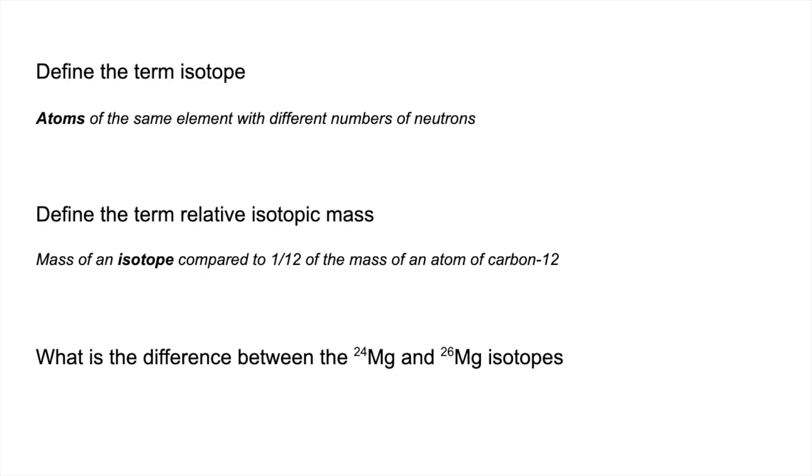And then finally, what's the difference between the Mg-24 and Mg-26 isotopes? Basically, Mg-26 has two more neutrons than Mg-24. Of course, you could say that the other way around.